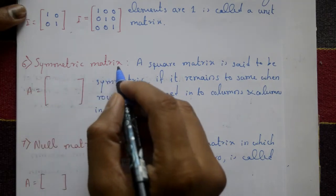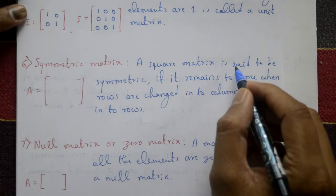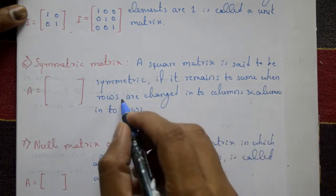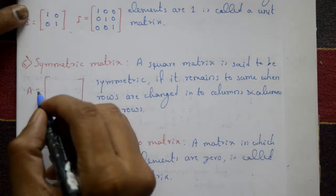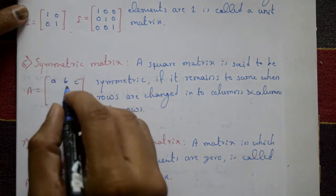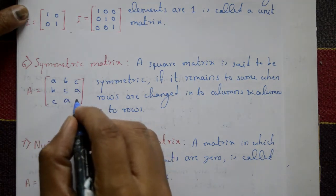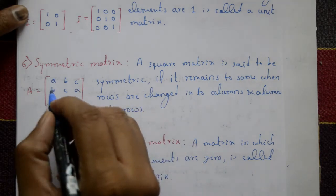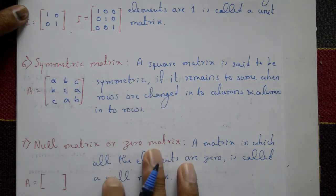Sixth type: symmetric matrix. If a matrix remains the same when rows are changed into columns or columns into rows, it is called a symmetric matrix. For example, matrix A with first row [a, b, c], second row [b, c, a], third row [c, a, b] — when you change rows into columns or columns into rows, you get the same matrix. That is called a symmetric matrix.